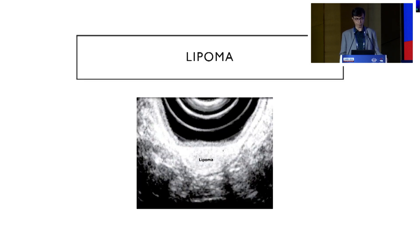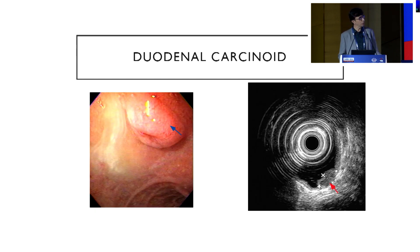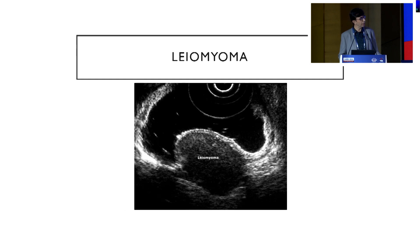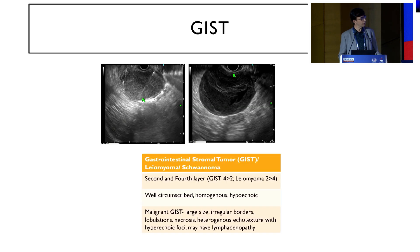Here are some examples: this is a lipoma arising from the third layer. You can see a duplication cyst — you can be sure of a duplication cyst because it is anechoic with posterior acoustic enhancement. This is a duodenal carcinoid arising from the second layer. This is a leiomyoma arising from the fourth layer. Granular cell tumor of the esophagus. And GIST, which is perhaps the most important SEL to diagnose fully to ascertain whether it is a pre-malignant condition.